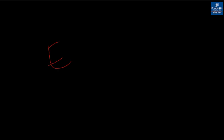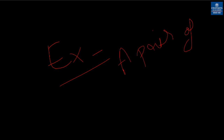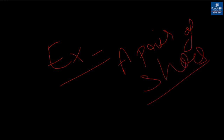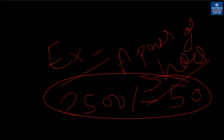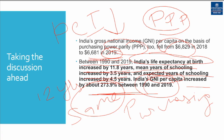Let's look at an example. If you bought a pair of shoes in India for Rs. 2,500, and the same shoes cost $50 in the United States of America, then the Purchasing Power Parity should be $50 between the US and India. This is how Purchasing Power Parity works.